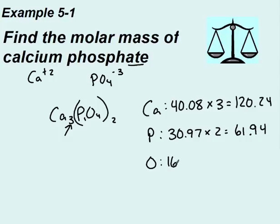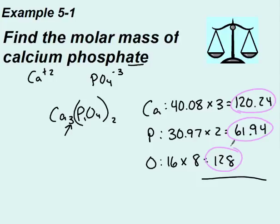And then I have phosphorus. So I'm breaking up that polyatomic ion. I have P, and phosphorus has a molar mass of 30.97. And I have two times one or two phosphoruses. And finally, I have oxygen. Oxygen, like we saw a second ago, has a mass of 16. And I have four times two or eight oxygens. I'm going to add all three of those numbers up to give me a final answer of 310.18 grams per mole.